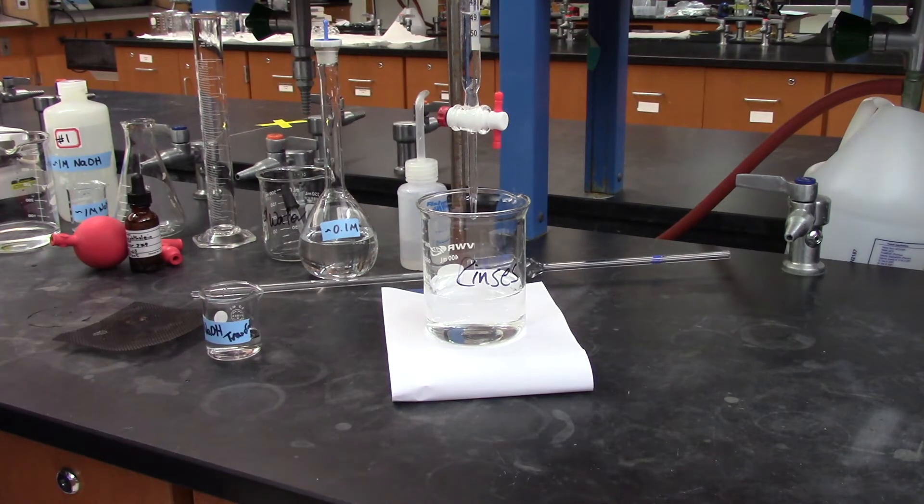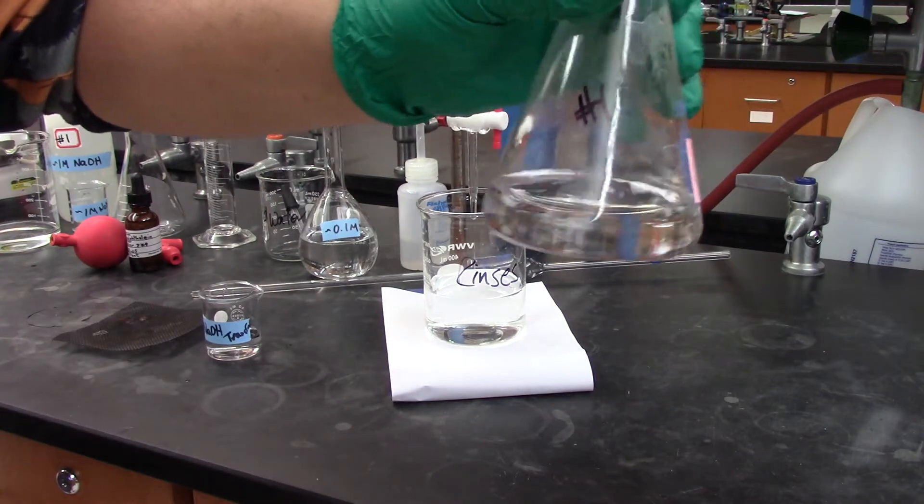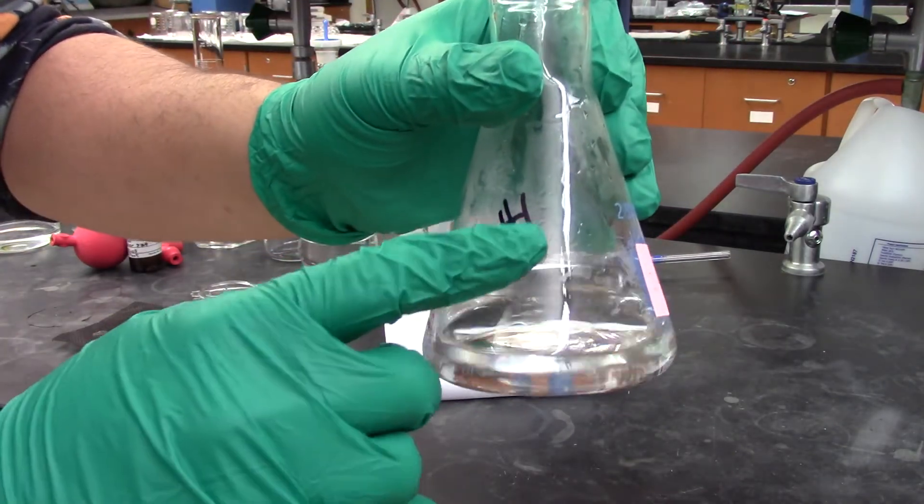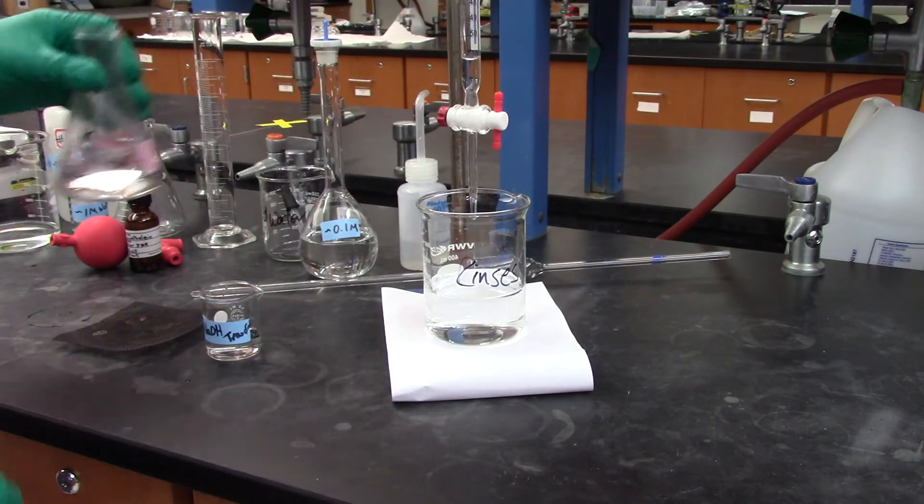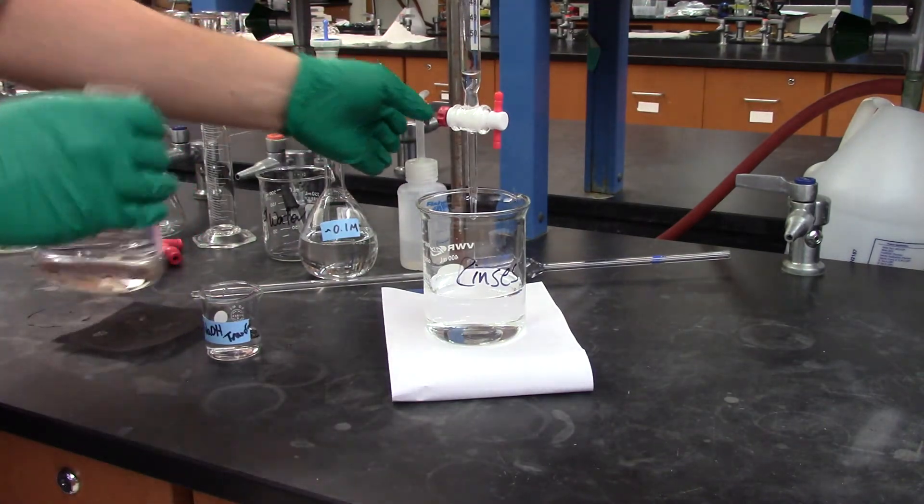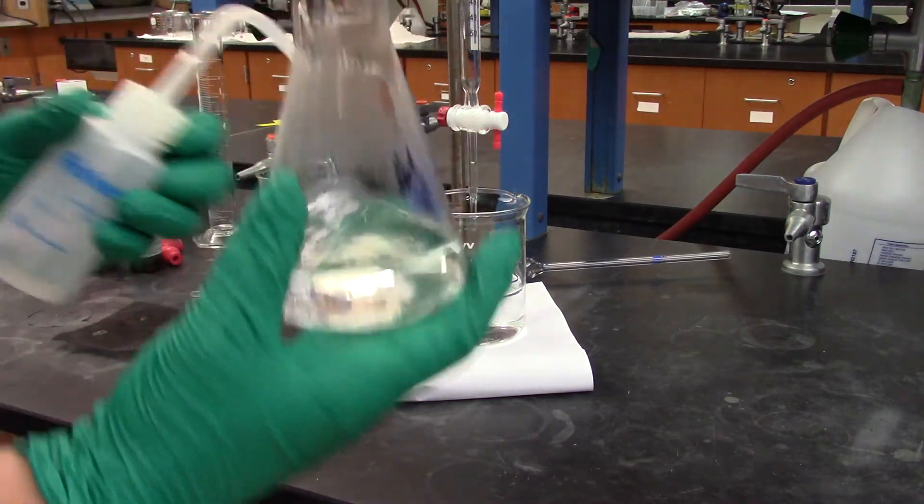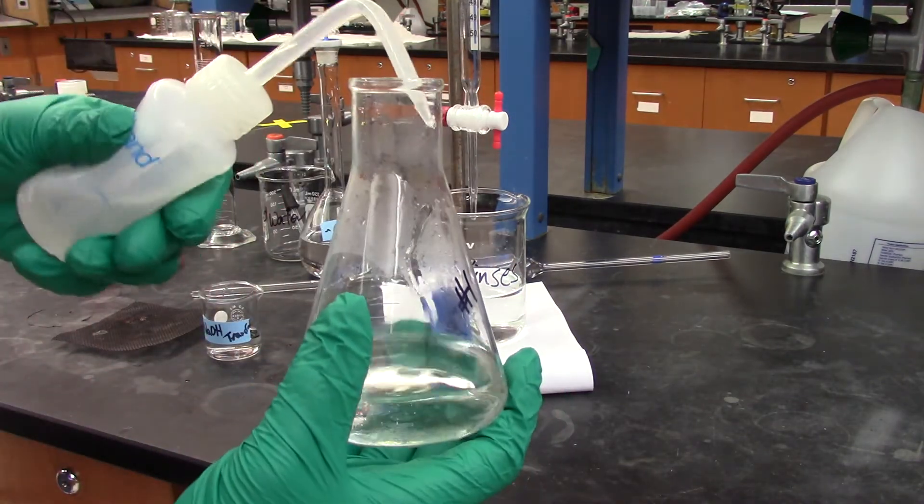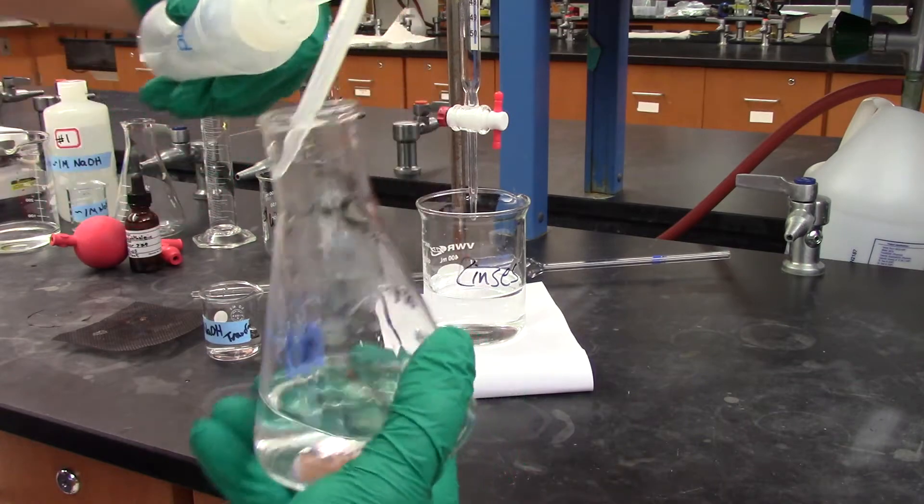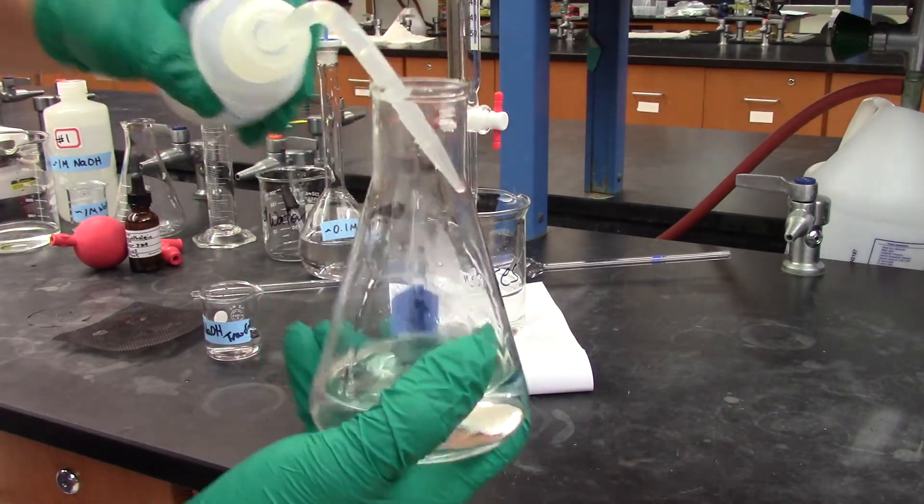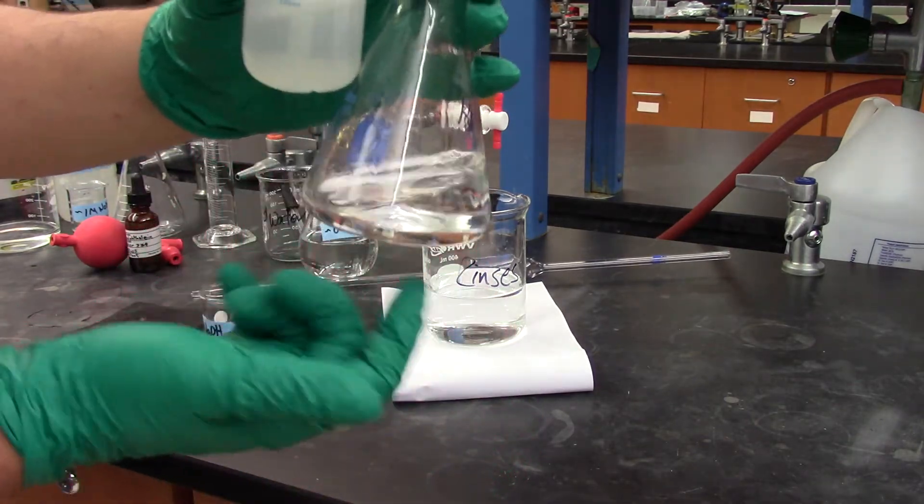My flask looks pretty good. All the KHP looks dissolved. I labeled it number one. It's important to rinse the sides of the flask before you begin to get any KHP down into your titration solution.